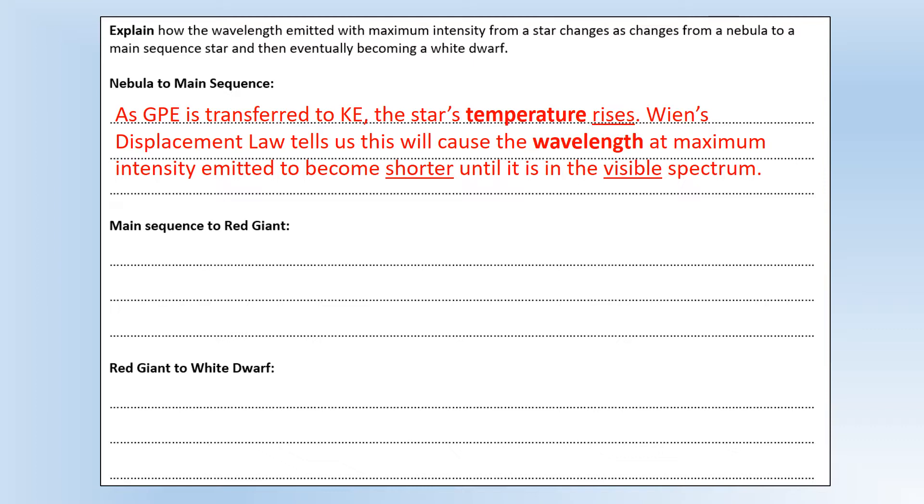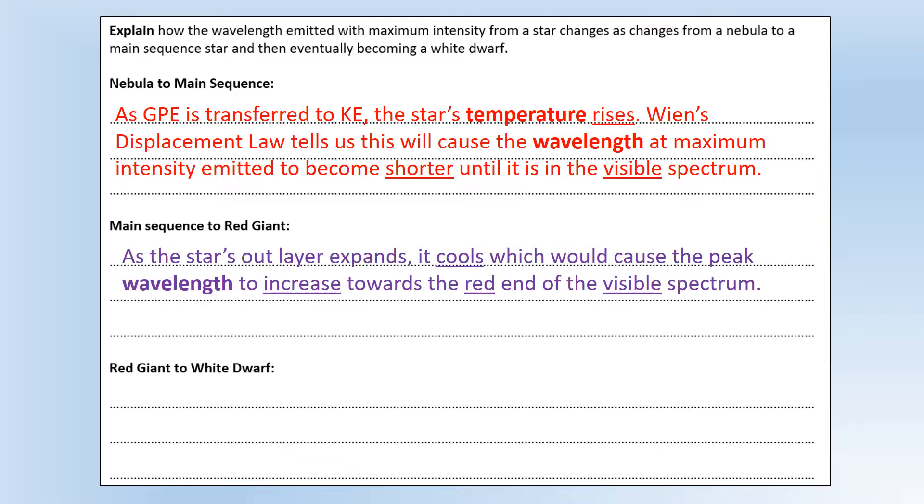Generally speaking with stars, their maximum will be in the visible spectrum when it becomes a main sequence star, but it will emit some either side of it too. Then explain how it changes when it goes from being a main sequence star to a red giant. As the star's outer layer expands, which is what we can see with the red giant, its temperature decreases or it cools and that would cause the peak wavelength to increase towards the red end of the visible spectrum. So that's why they appear red and we call them red giants.